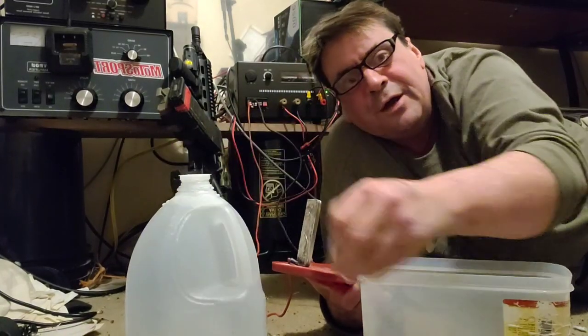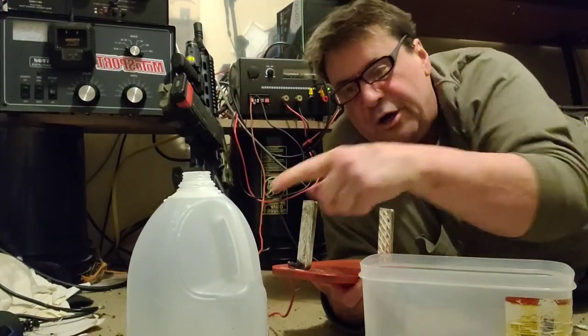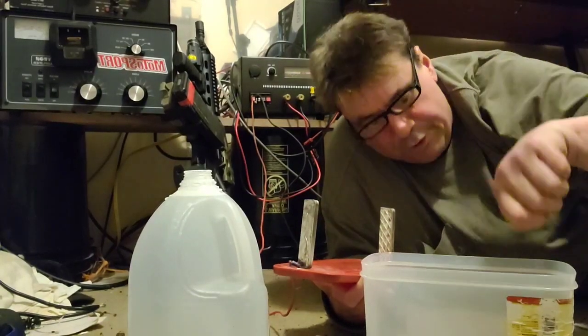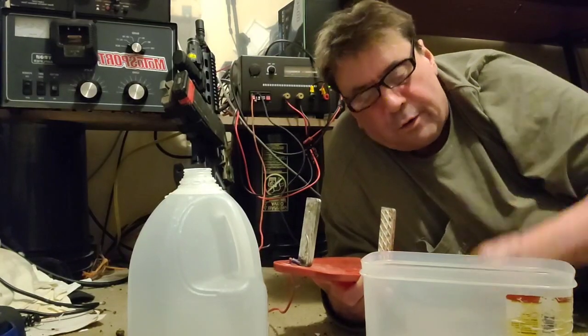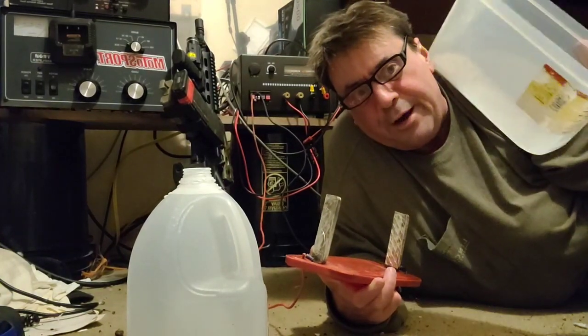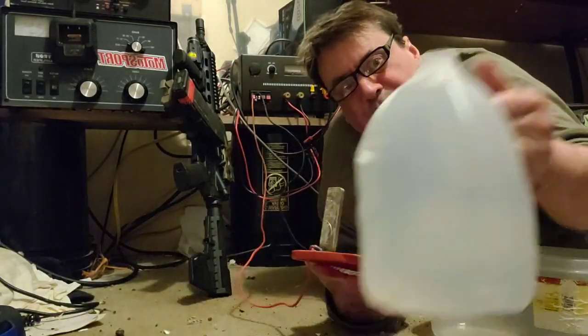When you're done, you can take your laser pointer and shine around in there and you'll see all the silver going around. Also when you pour it out, you want it in a light-proof container. So what I'll do is I'll spray paint this black and I'll pour it back in there and I'll have a gallon of colloidal silver.